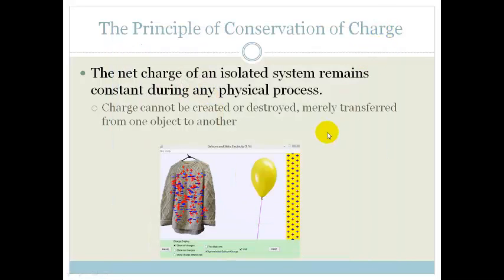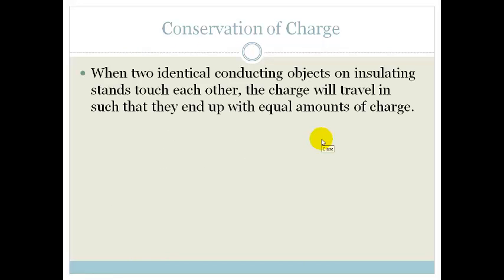Right. So when two identical conducting objects on insulating stands touch each other, the charge will travel in such a way that they end up with equal amounts of charge. So if we've got two little conducting objects on insulating stands, and we touch them, then they will end up with equal amounts of charge.